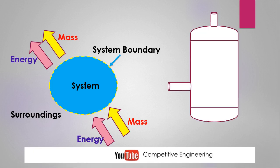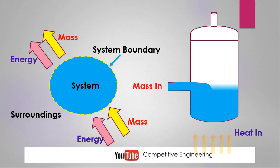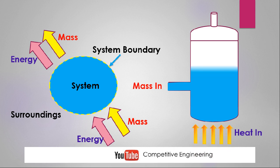I am going to explain the open system with an example. Consider a simple boiler — this is our system, and everything outside is the surroundings. We input water into the system, so mass is going from the surroundings into the system. Now I start heating at the bottom, meaning I am supplying heat energy — the energy is going into the system from the surroundings.